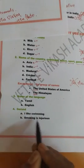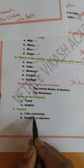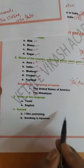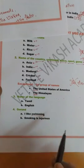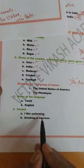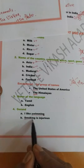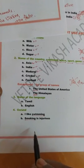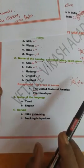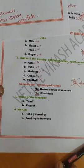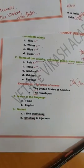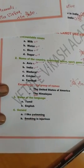The Himalayas — because 'Himalayas' is a mountain range, not a single mountain, we use 'The Himalayas'. For languages like English and Tamil, we do not use 'The'. Gerunds — like 'I like swimming', 'He is best in dancing', 'Smoking is injurious to health' — gerunds do not take 'The'. So, articles start with these rules.